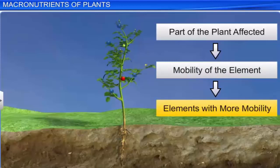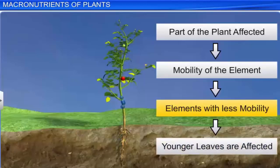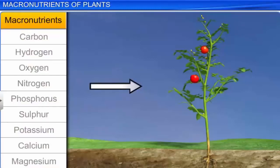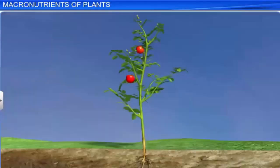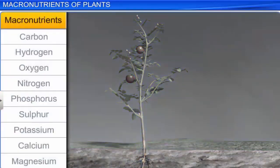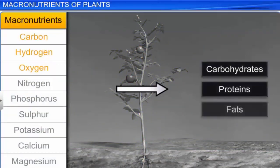Elements with more mobility export to younger leaves, making older leaves prone to symptoms. Younger leaves get affected in case of a less mobile element. Macronutrients like carbon, hydrogen, and oxygen are derived by plants from water and by gaseous exchange. They become the important constituents of carbohydrates, proteins, and fats.